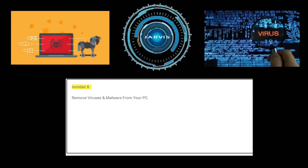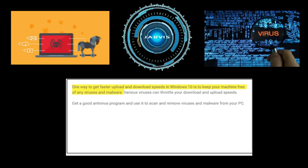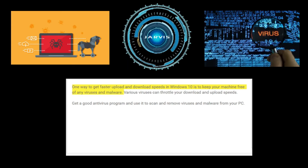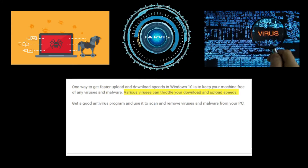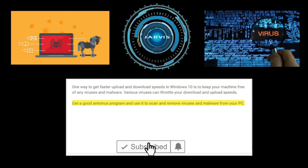Number eight: remove viruses and malware from your PC. One way to get faster upload and download speeds in Windows 10 is to keep your machine free of any viruses and malware. Various viruses can throttle your download and upload speeds, so get a good antivirus program and use it to scan and remove viruses and malware from your PC.